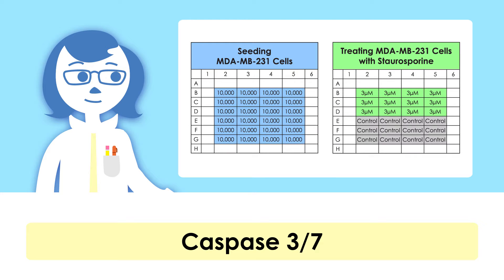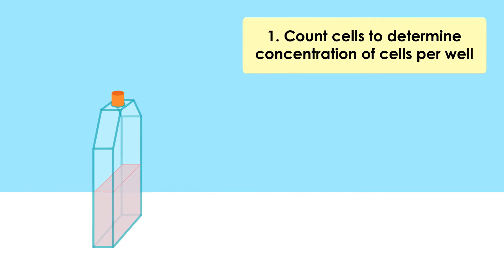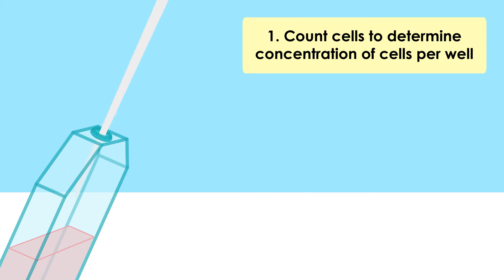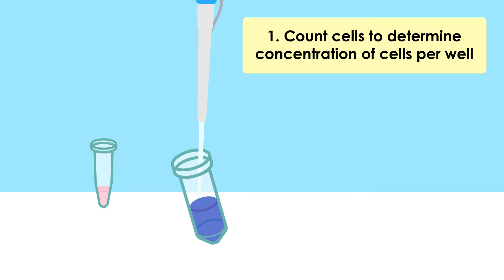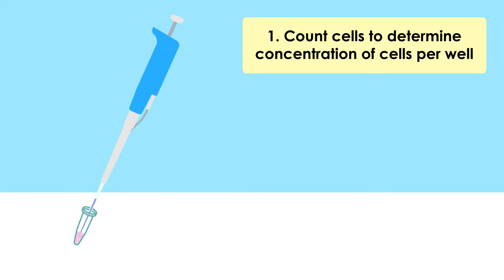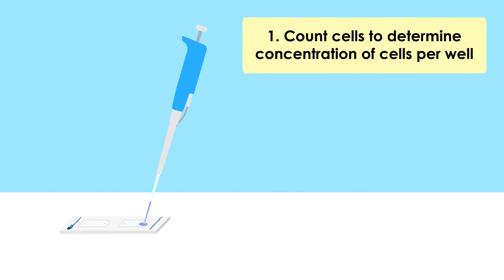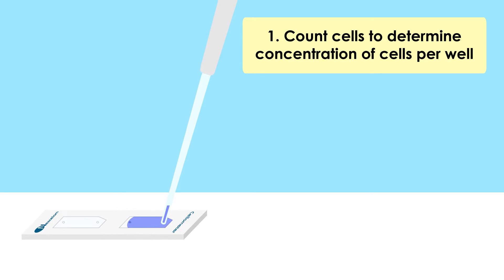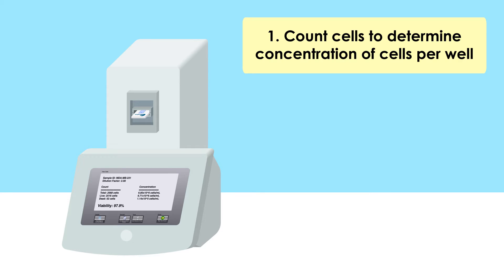Today I'll show you an apoptosis assay that was performed using an adherent breast cancer cell line MDA-MB231 that was treated with 3-micromolar staurosporine. To achieve the best accuracy of your cell plating, measure the cell concentration and viability using a Cellometer automated cell counter. Mix 20 microliters of cell sample and 20 microliters of Trypan Blue, then load 20 microliters of stained sample into the Cellometer counting chamber slide and perform a cell count to acquire cell number, concentration, and viability.